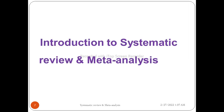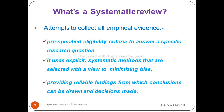Now we begin Chapter 1: Introduction to systematic review and meta-analysis. What is a systematic review? 'Review' means critical appraisal, and 'systematic' means based on a planned or structured way. So a systematic review means reviewing or appraising content based on scientific evidence or a scientific procedure or method.